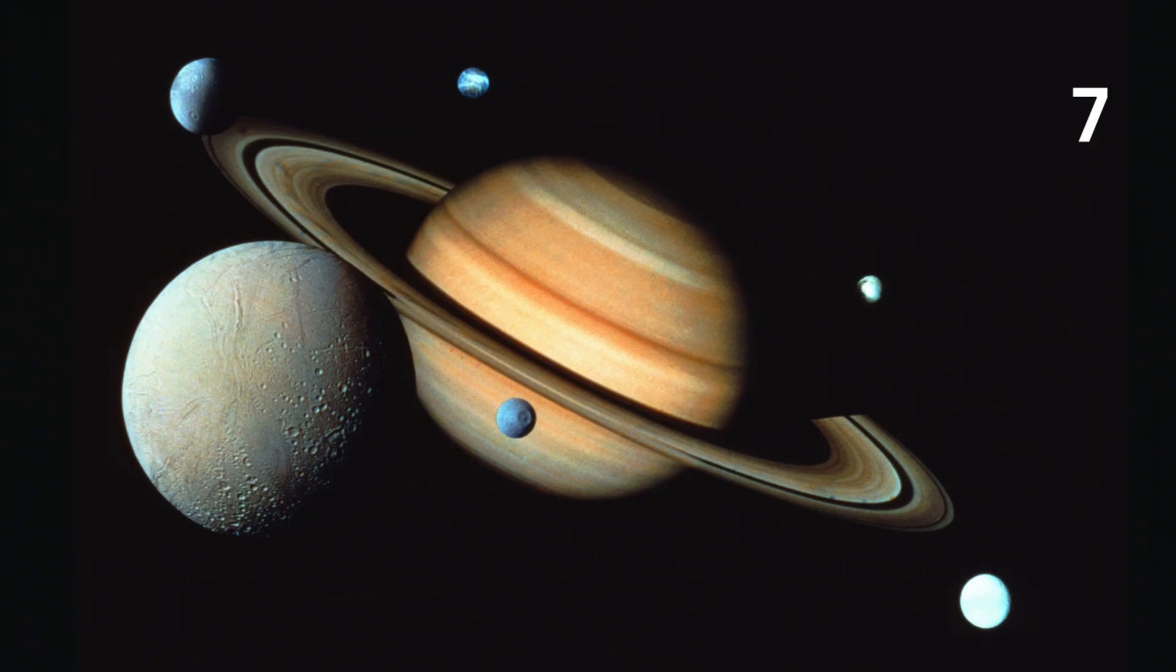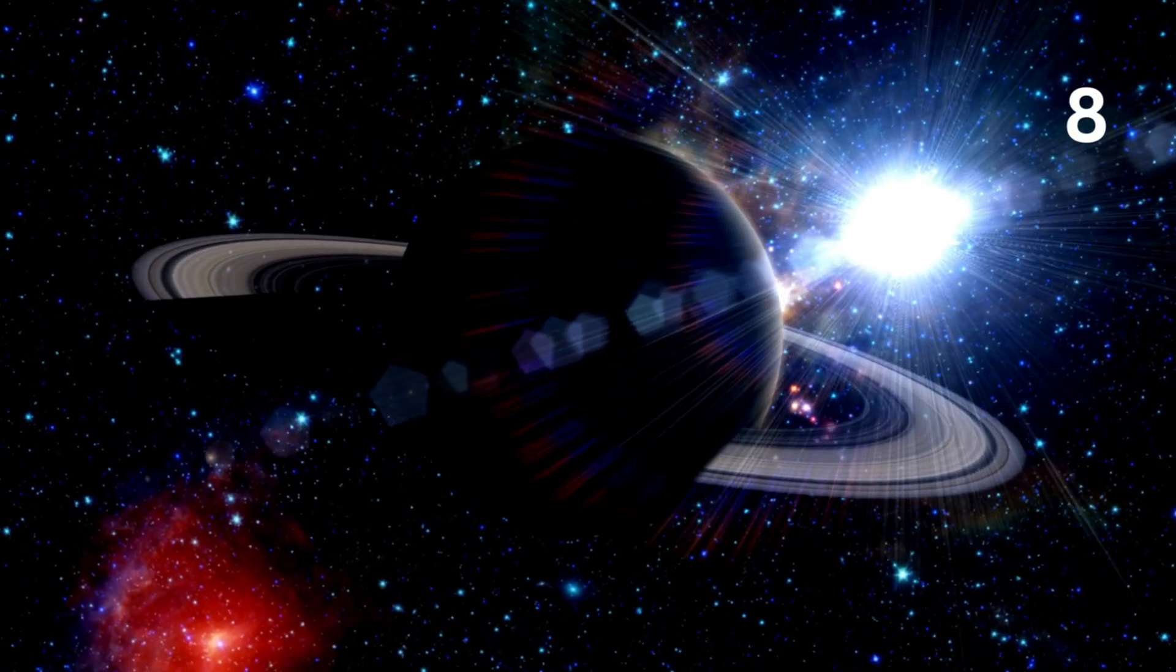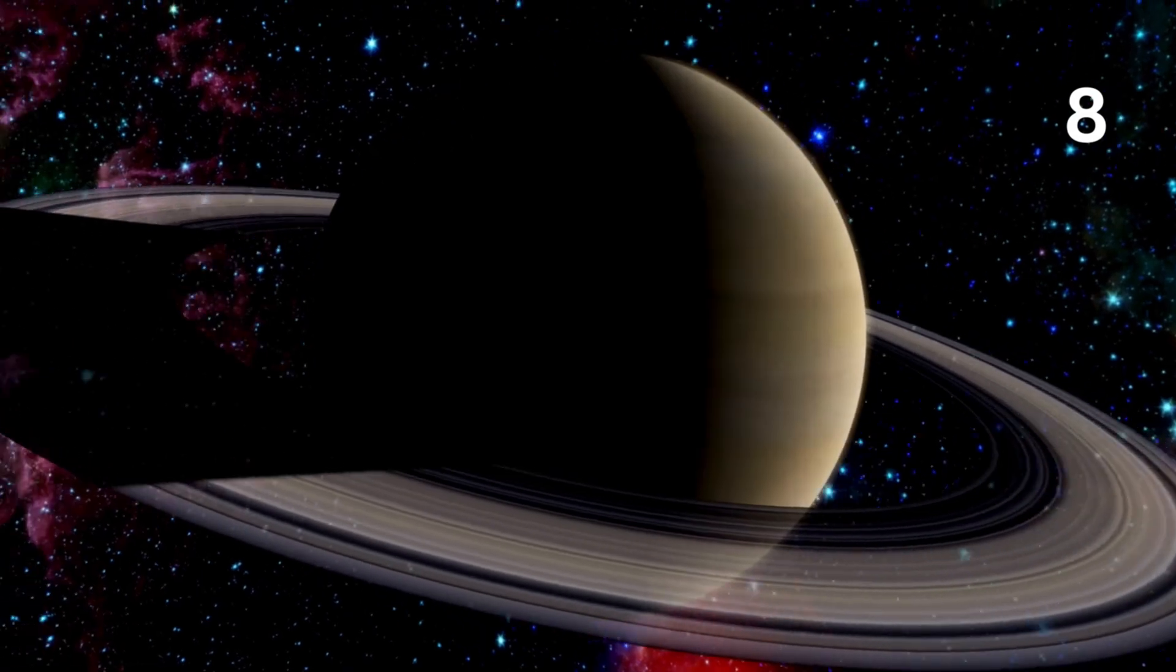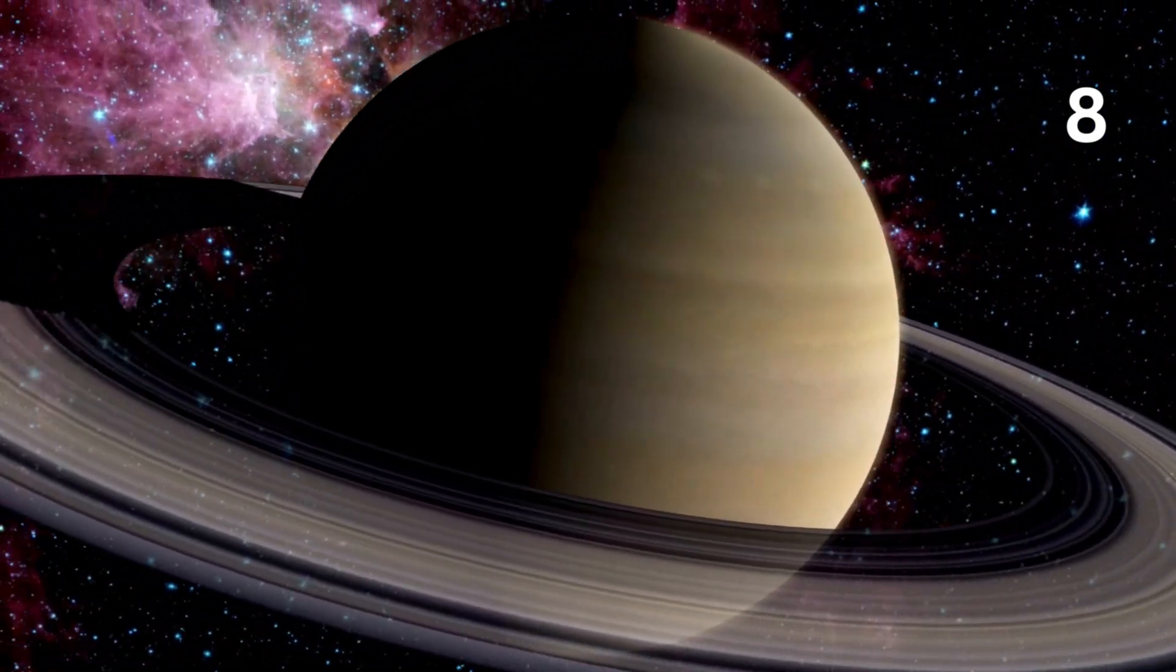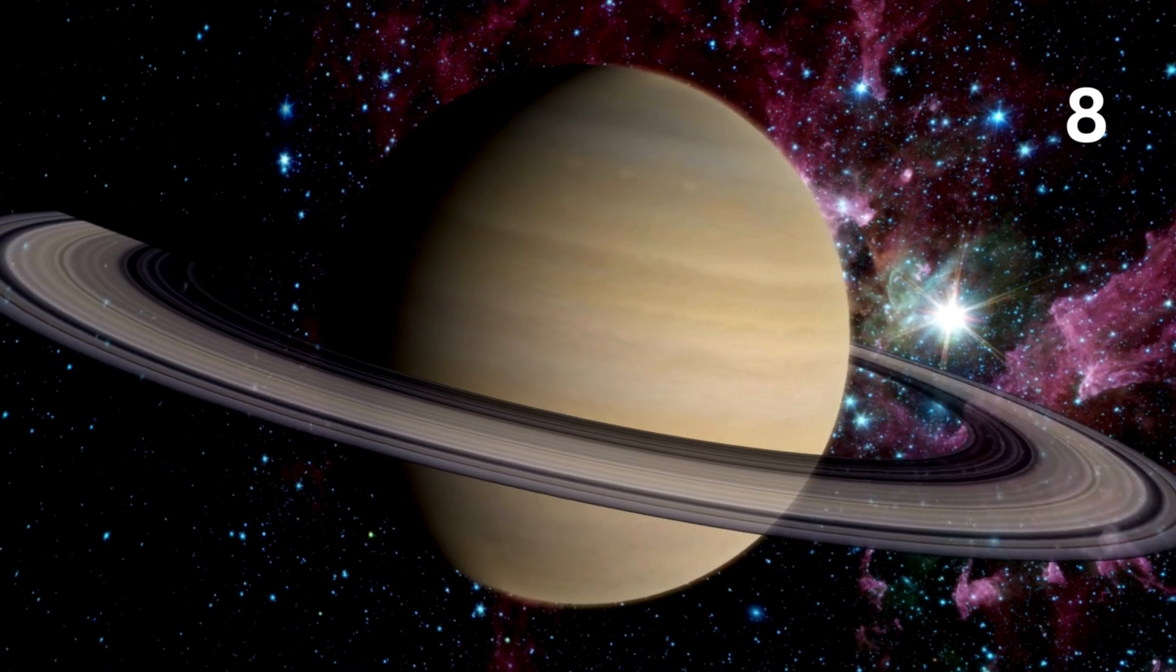Saturn has the most moons of all the planets, with 146 counted so far. And Saturn's rings, that are famous, are made up of particles, some of which are as big as mountains.